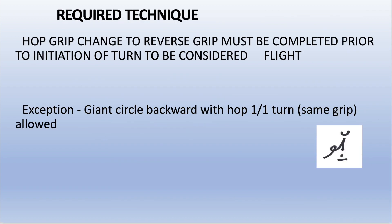Another clarification: hop grip changes on bars. If she does a hop to a handstand — cast hop, whatever — the hop has to be done on the ascending phase, on the way up, in order to count it as a release. If she does a hop with a half turn, like a cast handstand hop with a half turn, they have to complete the hop before the turn. And if she wants to count it as a release skill, the hop has to be on the way up.